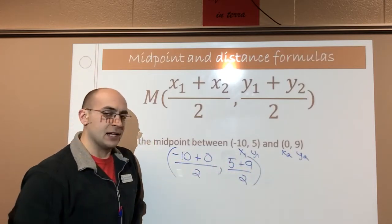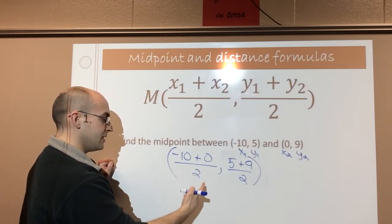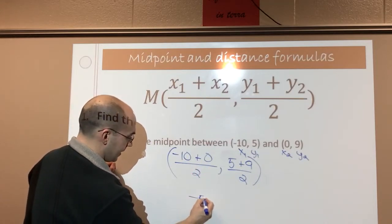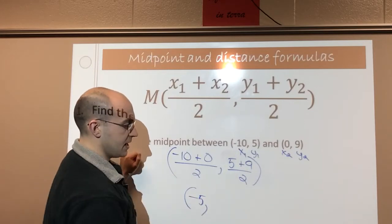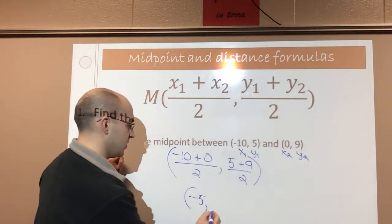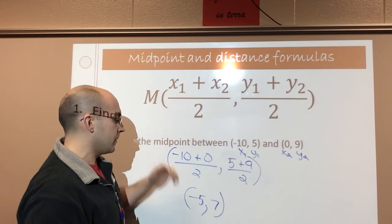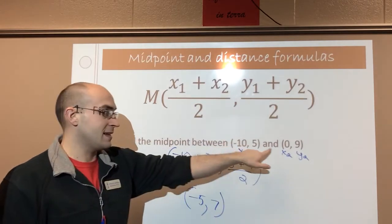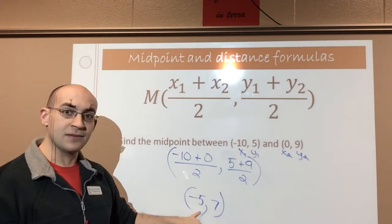Now I'm just going to solve that algebraic equation. So negative 10 plus 0 is negative 10, divided by 2 is negative 5. And then 5 plus 9 is 14, divided by 2 is 7. So according to the formula, my midpoint between these two endpoints is going to be negative 5 comma 7.